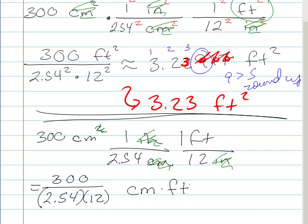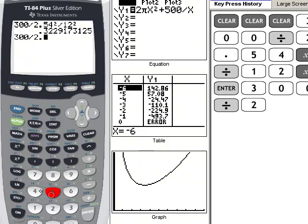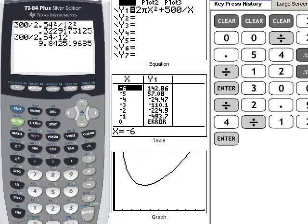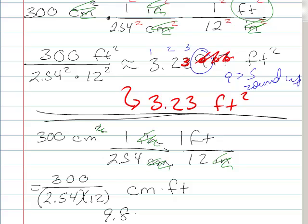And if you actually worked that out, so you'd have 300 divided by 2.54 divided by 12, which would be 9.8 something, whatever. Whatever that was, 9.84. You'd have 9.84 centimeter feet, which really doesn't mean anything.